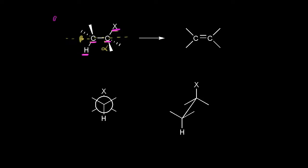We say this has to be anti-periplanar — the anti meaning hydrogen and halogen on opposite sides, and the planar part meaning those four atoms are in the same plane.